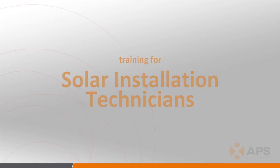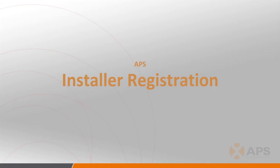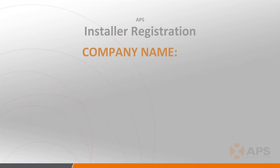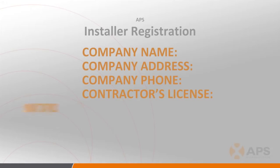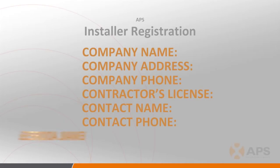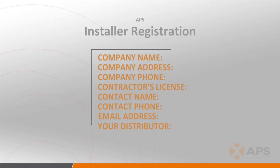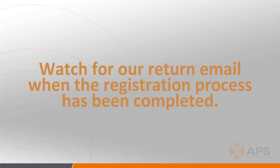Before we get started on the actual training, let's take a few seconds to talk about getting yourself registered as an installer with APS. If you've not already done so, email APS Technical Support at support@APSAmerica.com letting them know that you need to get registered. Please provide the following information: Company Name, Company Address, Company Phone Number, Contractor's License Number, Contact Name, Contact Phone Number, Contact Email Address, and the name of your distributor. You will not be able to set up your customers with online monitoring without being a registered APS installer, so it's critical that you get this done in advance. Technical Support will send an email to the contact name provided when the registration process is complete and your installer account has been set up.